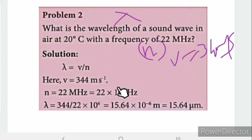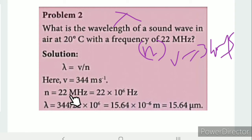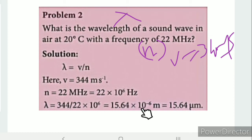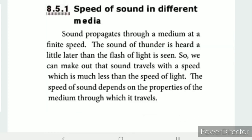The speed of sound v = 344 m/s at approximately 20–25 degrees Celsius. The frequency n = 22 MHz = 22 × 10⁶ Hz. Calculating: λ = 344 / (22 × 10⁶) ≈ 15.64 × 10⁻⁶ m.